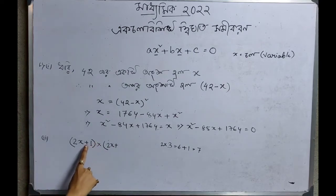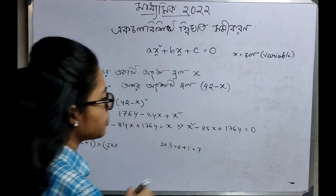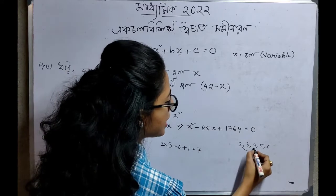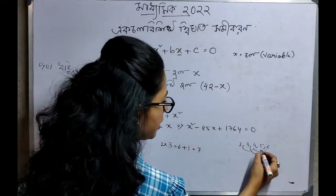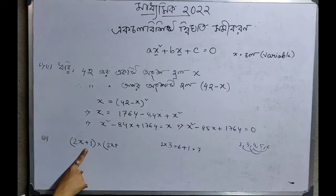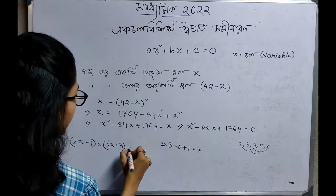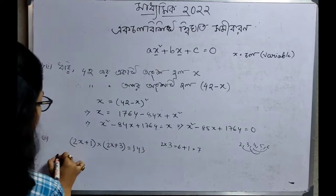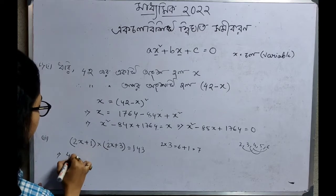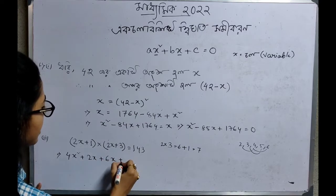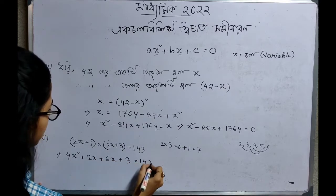For the given x, we work through the steps. Adding values: 2, 3, 4, 5, 6 — the result will be 1. So we have 2x into x plus 3 is equal to 143, expanding to 4x² plus 2x plus 6x plus 3 equal to 143.